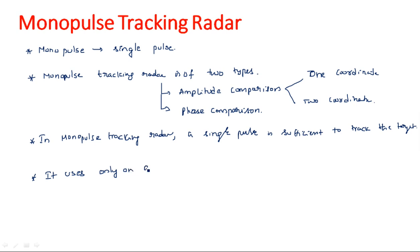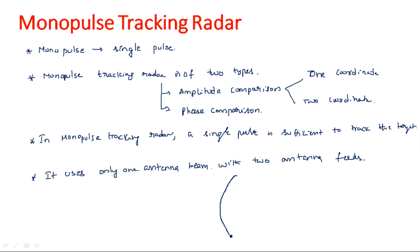Monopulse tracking radar uses only one antenna beam. How is a single antenna beam sufficient? It works with two antenna feeds inside a parabolic antenna. The single parabolic reflector plate is used, but with two feeds - a minimum of two feeds. Increasing the number of feeds allows us to cover more area.